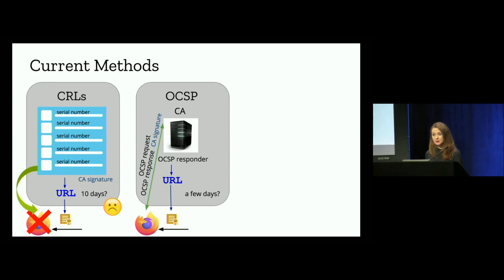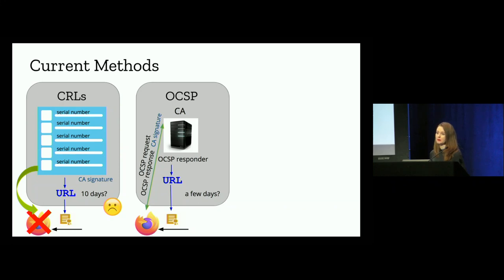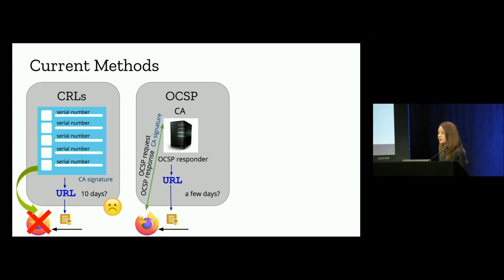Then there's the Online Certificate Status Protocol, or OCSP. This allows a client to query the revocation status of a single certificate by sending an OCSP request to a CA's OCSP responder, and it receives a response signed by the CA. In theory this should be better, but these things fail often — they're very unreliable, they add latency to the connection, and there are also privacy concerns because they leak information about the domains to which the client is connecting.